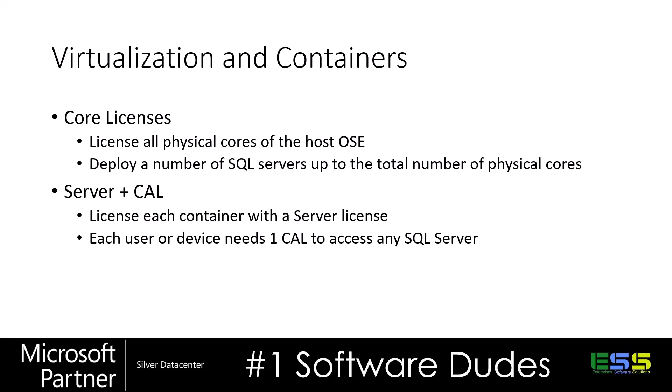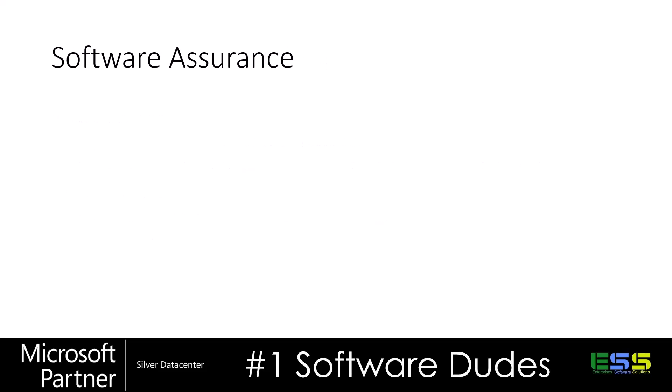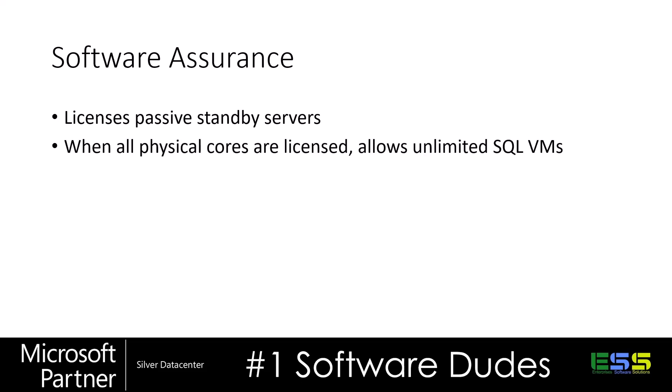This adds complexity to the core versus Server CAL cost comparison. Software assurance adds additional features with an ongoing fee to Microsoft. With active software assurance, you can license passive standby SQL servers — servers that are not actively serving users or devices, but may be replicating data. Software assurance also allows you to license all physical cores on a host and have unlimited SQL VMs, though you're still limited by the hardware. Additionally, you can reassign your licenses more frequently — without software assurance it's once every 90 days, but with it you can do so more often.